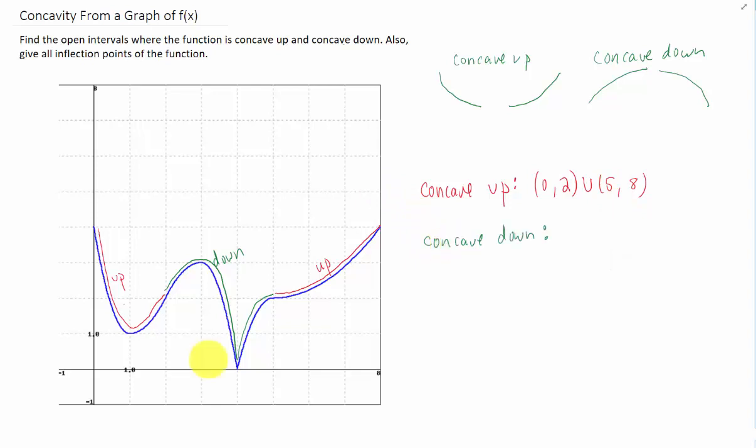Now where is the function concave down? Well, we're talking about x values again. Our function is concave down from 2 to 4, and then right here at this cusp, this function does not have a derivative or a second derivative. So we're just going to say 2 to 4, and then we pick back up here just to the right of x equals 4, and the function is concave down until x equals 5.